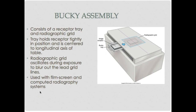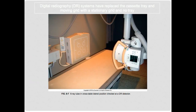The Bucky assembly consists of a receptor tray and a radiographic grid. You put your image receptor in the Bucky tray and there's a grid set inside the table. The grid oscillates during the exposure to blur out any lead lines within the grid. We use this with film screen and computed radiography. With a DR system, the cassettes and cassette trays are taken out and it's a direct digital device — typically 17 by 17 — and there are two different ways it captures: direct and indirect.